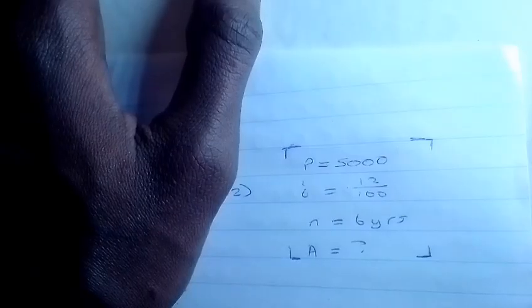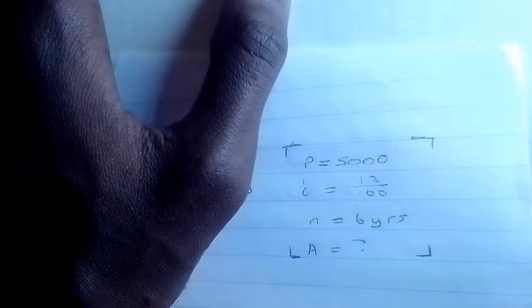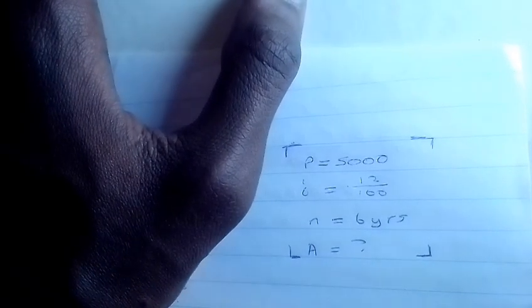P, which is the original price or investment, is 5000. Alright, I don't know what's up with the camera. So our P, which is the original price or investment, is 5000.